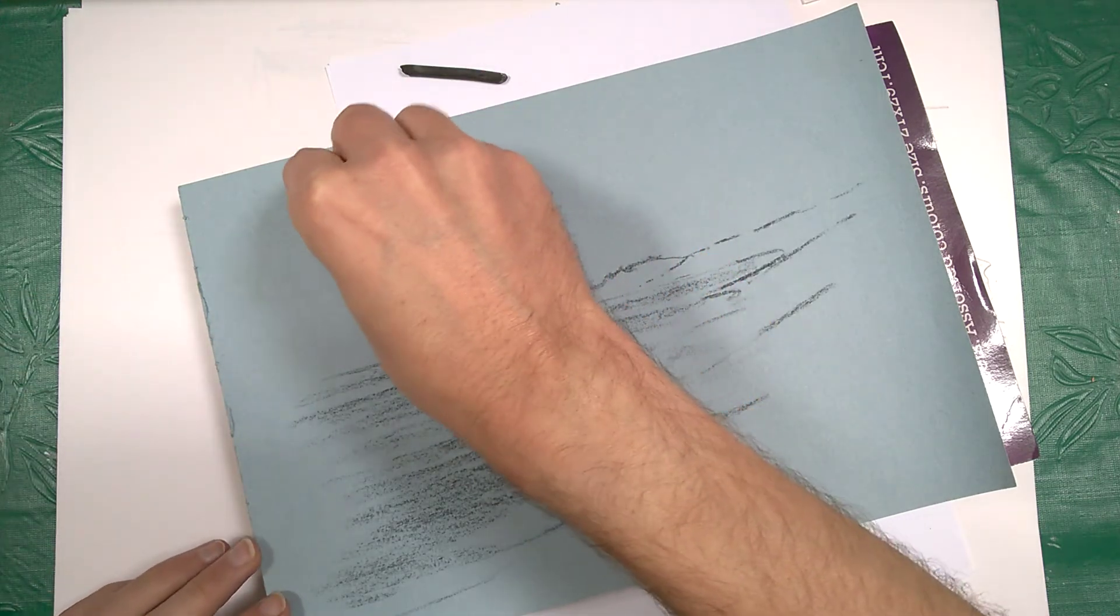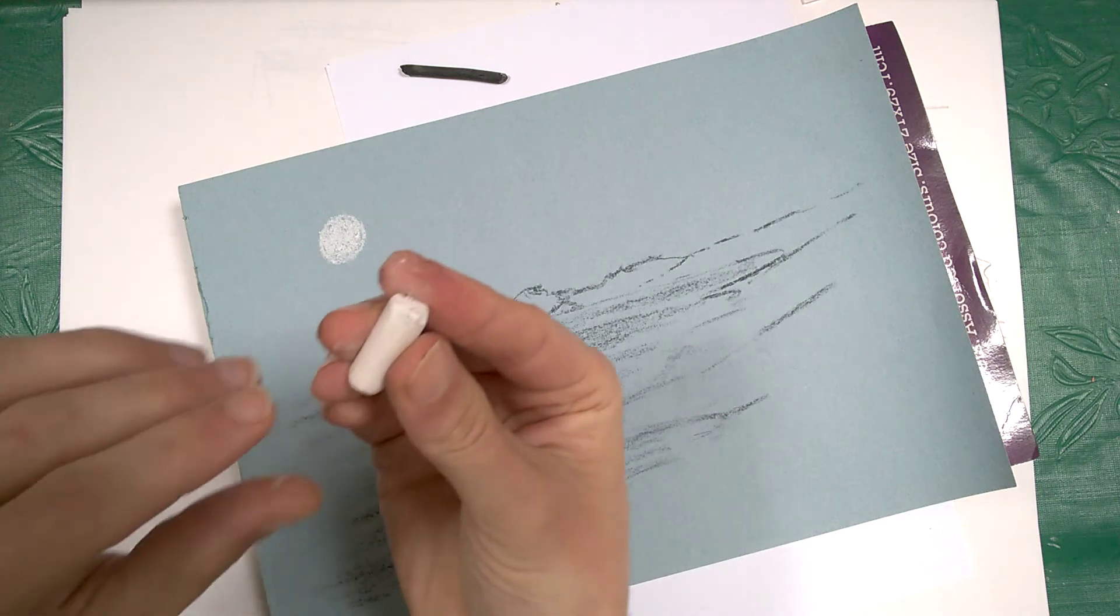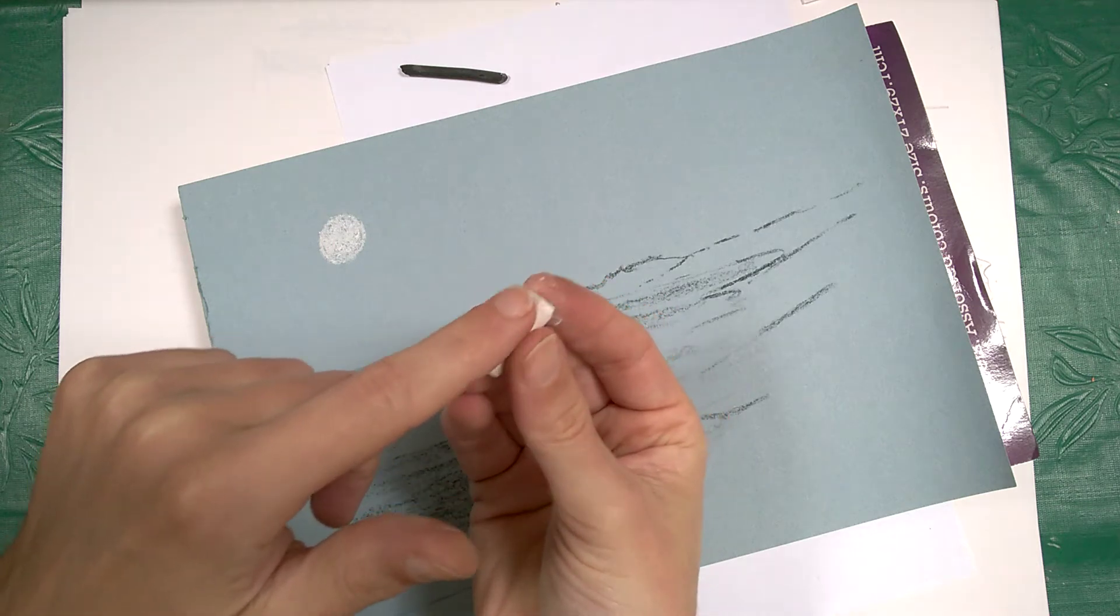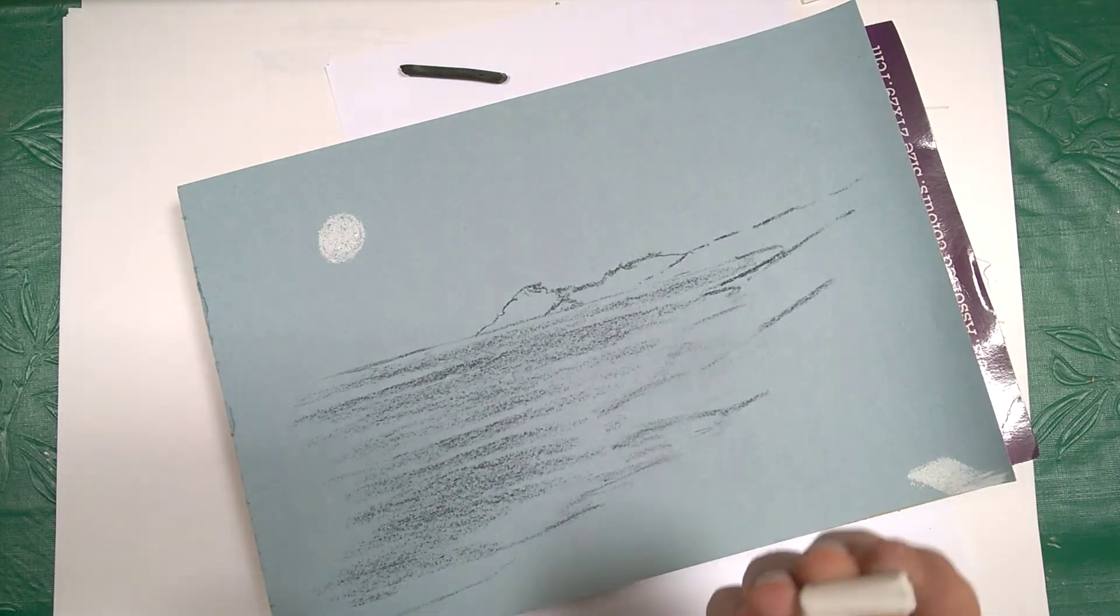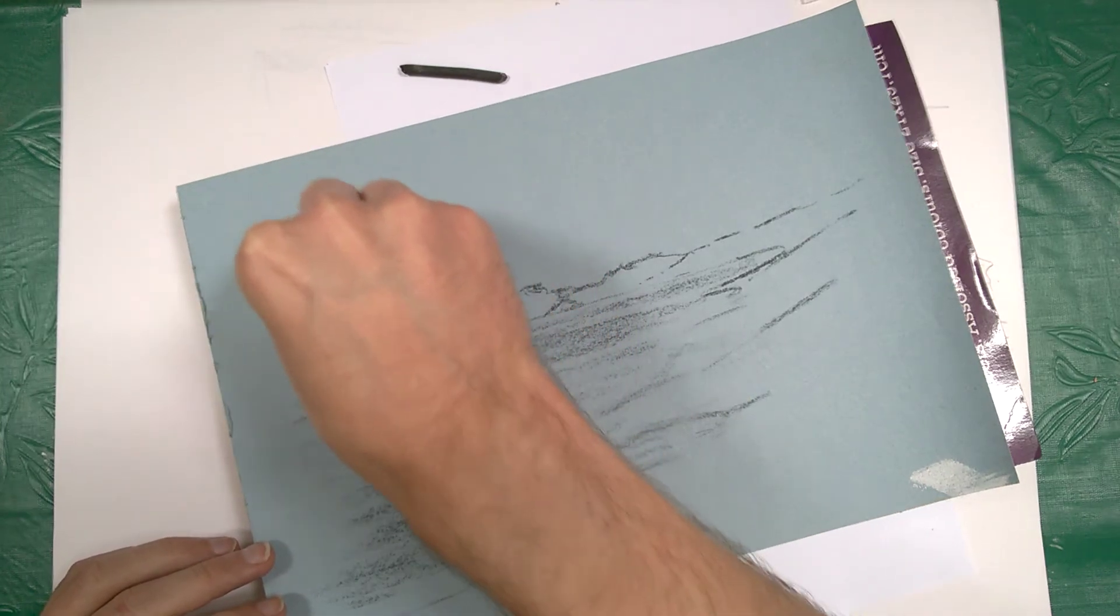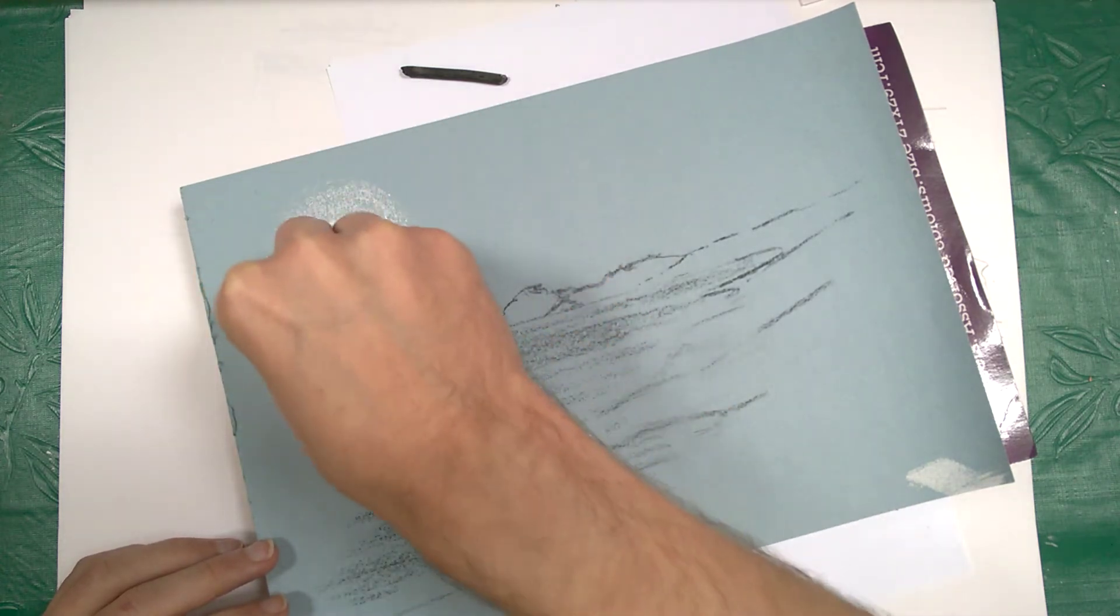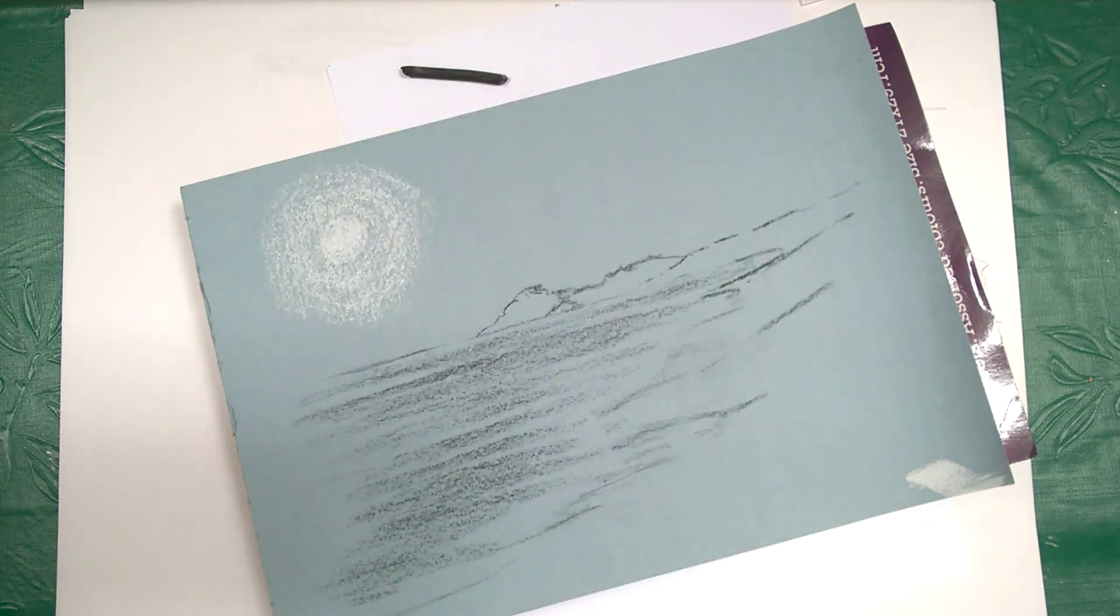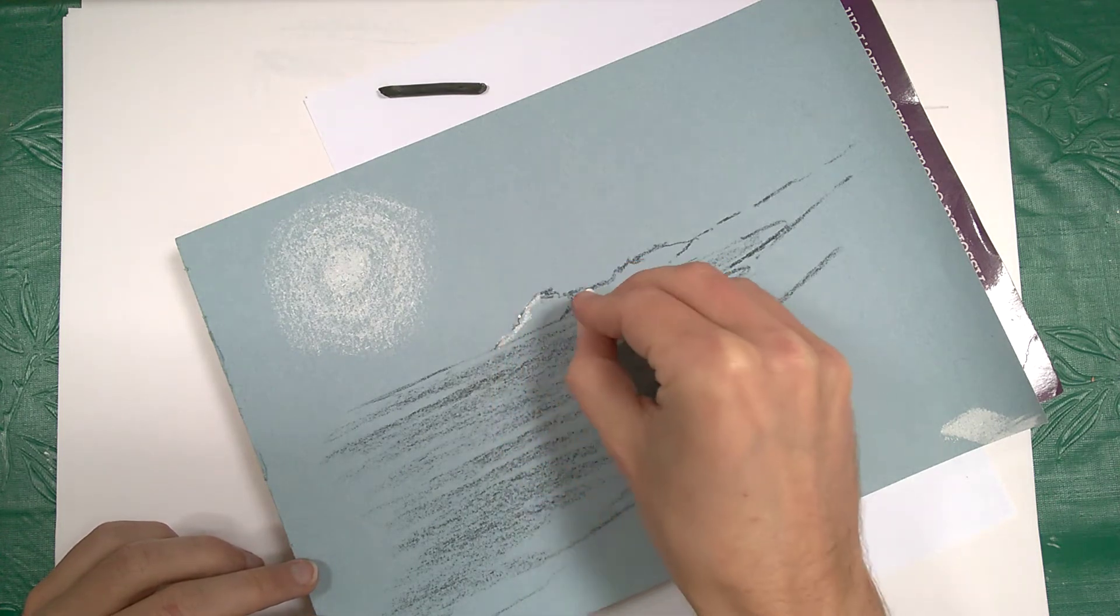And once you've got the source of light, you need it to radiate out with your chalk. Make sure you've got a nice flattish piece where the outer surface, the kind of slightly shiny surface has been worn away. And if you're not sure, get a little bit of scrap paper. You can go like that. What you're going to do is you're just going to get that dust on the paper.